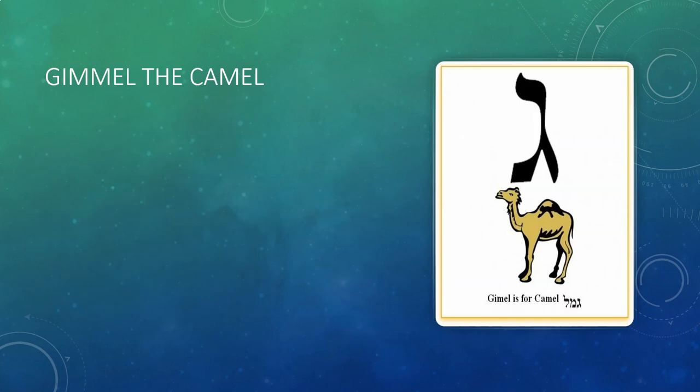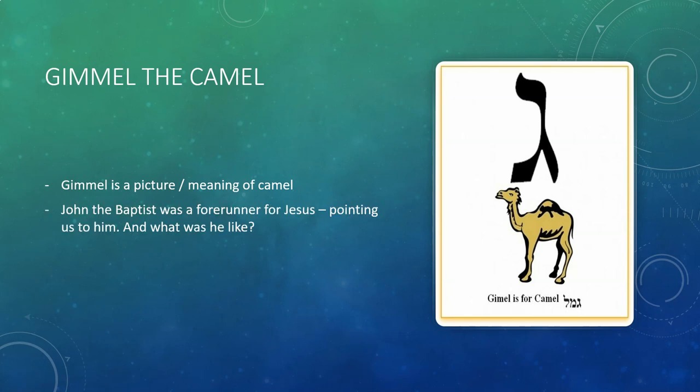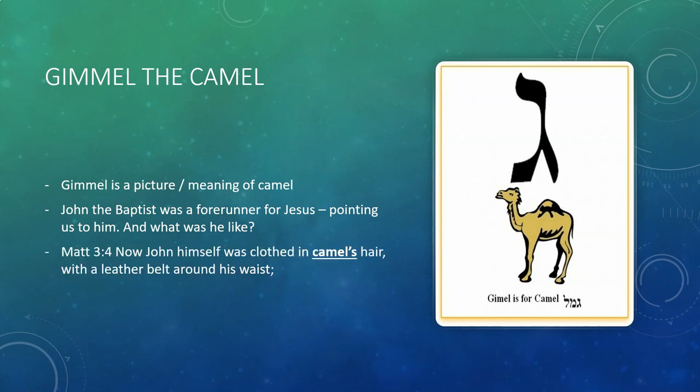It's interesting that Gimel also means a camel — which makes me think of John the Baptist. He was a forerunner for Yeshua the Messiah, pointing us to him. The Bible doesn't often say much about how people were clothed, but for John it makes an exception and explains that he was clothed in camel's hair. That would have been very unusual, and that's why it's highlighted in Matthew — it was getting people's attention to something different about his dress. It relates to the camel, Gimel, and again relates to the Holy Spirit — he had a ministry like the Holy Spirit.